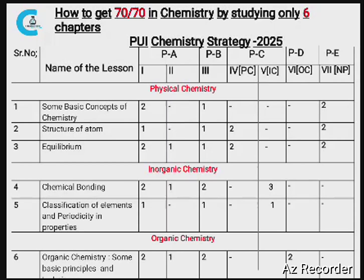These are the 6 chapters: Some Basic Concepts of Chemistry, Structure of Atom, Equilibrium, Chemical Bonding, Classification of Elements, and GOC (General Organic Chemistry).